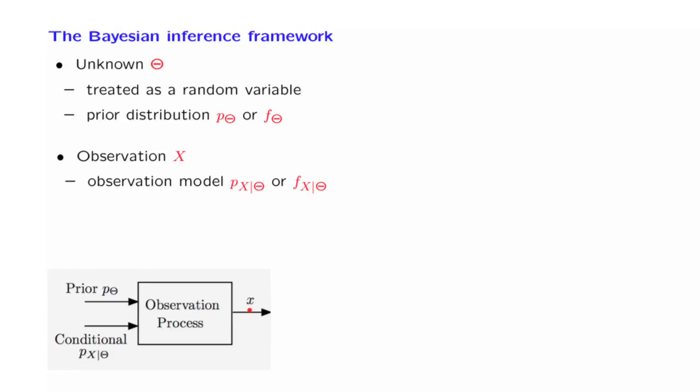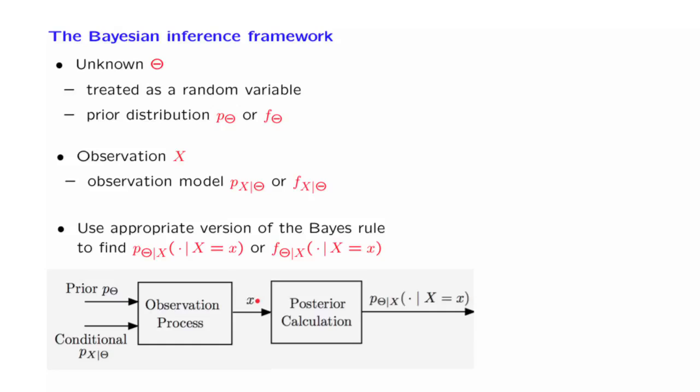Once we have obtained a specific value for the observations, then we can use the Bayes rule to calculate the conditional distribution of theta, either a conditional PMF if theta is discrete, or a conditional PDF if theta is continuous. This will be a complete solution of the Bayesian inference problem.